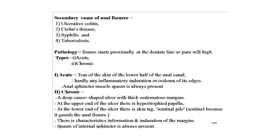Now the pathology. The fissure starts proximally at the dentate line, so the whole of the anal fissure lies in the sensitive skin of the anal canal, and that is why pain is the most prominent symptom. There are two types of fissure in ano: acute and chronic. Acute fissure in ano is a tear of the skin of the lower half of the anal canal.